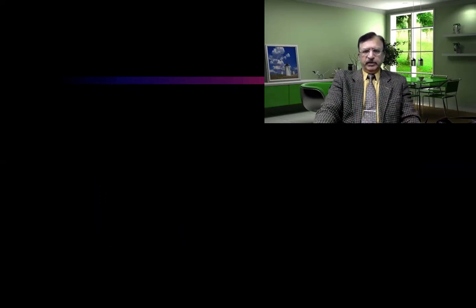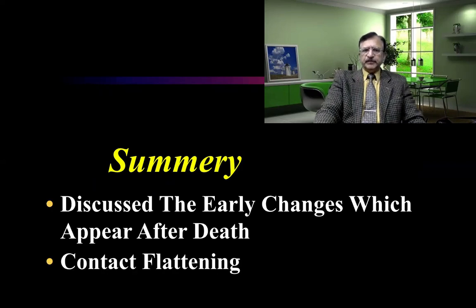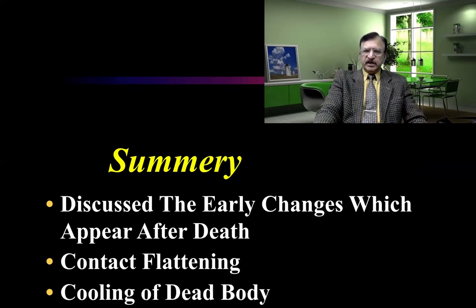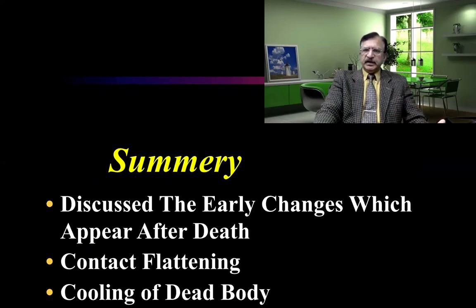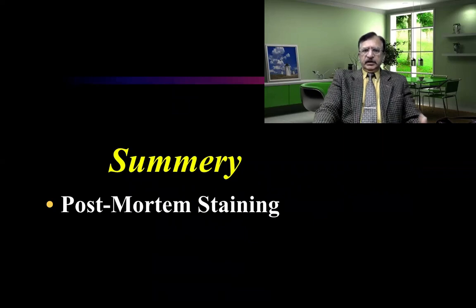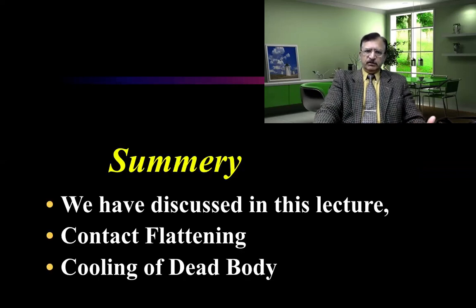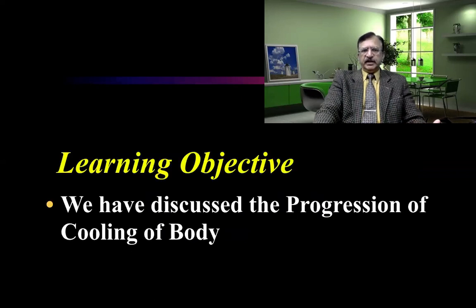To summarize this lecture: we discussed the early changes after death, specifically contact flattening and the cooling of the body. The body cools to environmental temperature, but for a certain period maintains its temperature due to the insulation property of the outer layer and anaerobic glycogenolysis continuing until glycogen reserves are exhausted. In the next lectures, we will discuss post-mortem staining and rigor mortis.